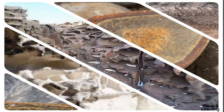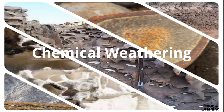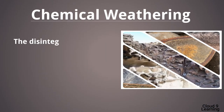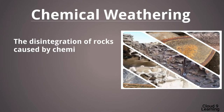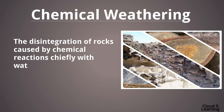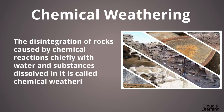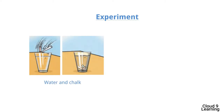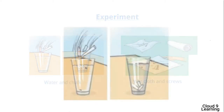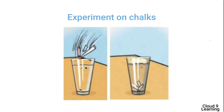Now, let us study about Chemical Weathering. Chemical Weathering is the disintegration of rocks caused by chemical reactions, chiefly with water and substances dissolved in it. Now, let us see an experiment on chalk and on screws or nails. This activity will help us understand how Chemical Weathering takes place.